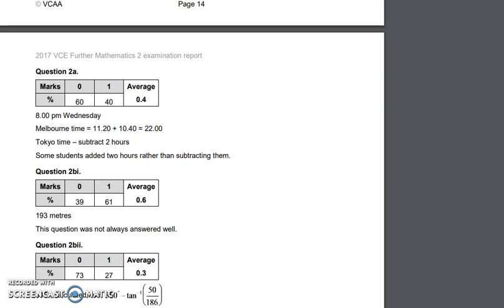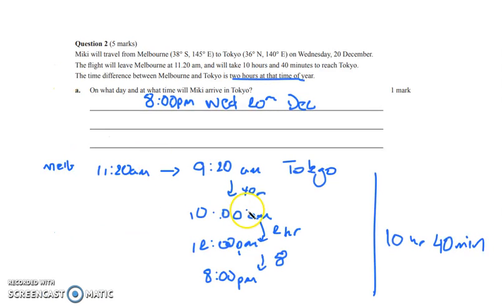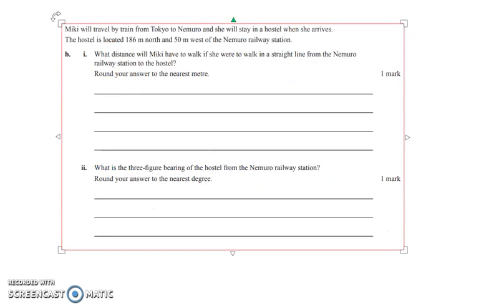Looking at the assessor's comments for this, only 40% of people managed to get that question correct. Some students added two hours rather than subtracting. So knowing that, like I said, when we're sitting in Melbourne it hasn't been 11:20 yet in Tokyo because we are ahead of them. So it goes down to 9:20. Knowing that conversion is the most difficult thing.